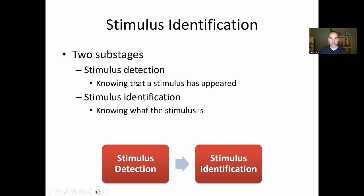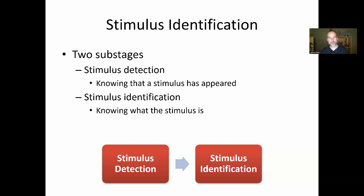For stimulus identification there are two sub-stages: stimulus detection — just knowing that a stimulus has appeared — and stimulus identification — going a further step to know what the stimulus is. For example, if a friend jumps out and yells 'boo,' you're startled — that's stimulus detection, recognizing a threat. As you take more time to go through stimulus identification, you then realize it's just your friend who startled you, and that second stage reassures you that you're not being attacked.